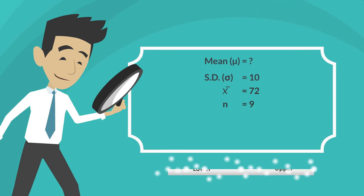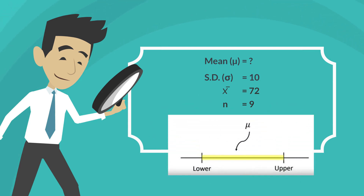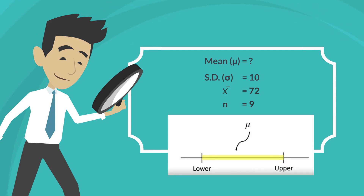Alternatively, we can calculate the range of plausible values for the unknown class average score. This is known as a confidence interval.